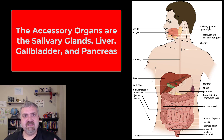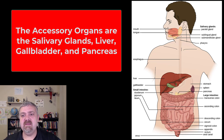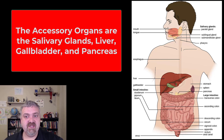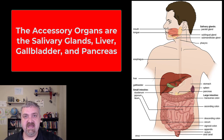Then the pancreas — you know it from earlier chapters for its endocrine role: producing insulin to lower blood sugar after meals and glucagon to raise blood sugar between meals. But now we're talking about the exocrine pancreas — the digestive portion. Its job is to make bicarbonate, which is a buffer that neutralizes the stomach acid coming from the stomach, and to produce digestive enzymes. Most of the critically important digestive enzymes that break down your food come from the pancreas.